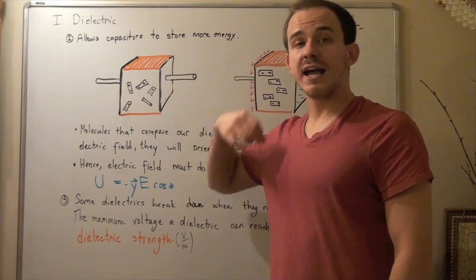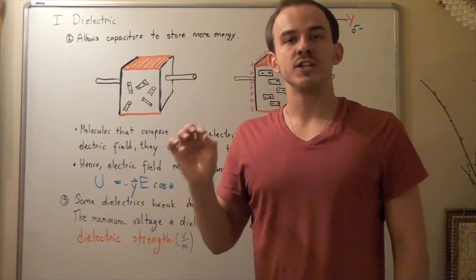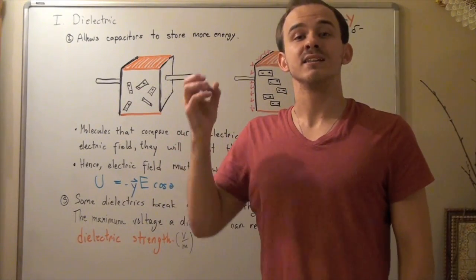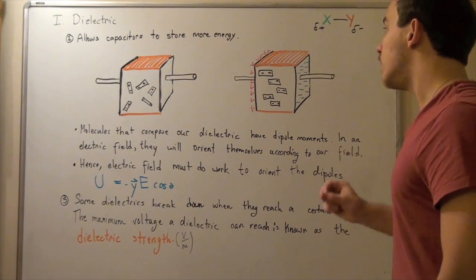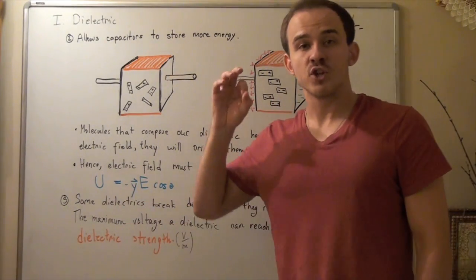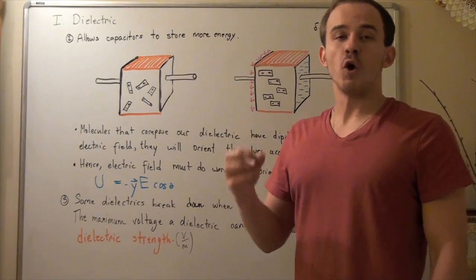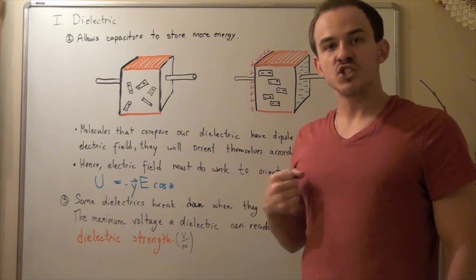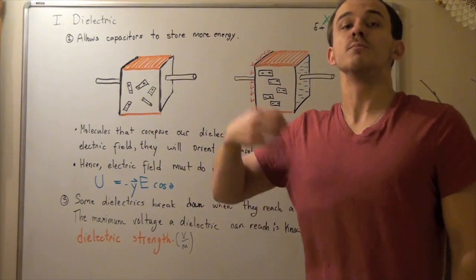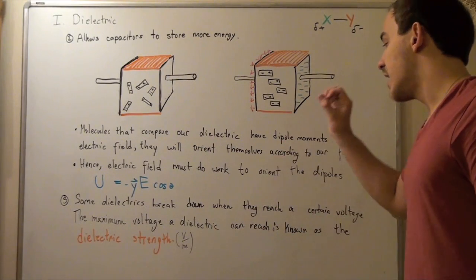The final purpose of our dielectric is the following. Some dielectrics have a maximum voltage — if this voltage is achieved, the dielectric will break down and begin to conduct electricity. At or above this voltage, electrons will begin to flow from one plate to the other, allowing the capacitor to discharge and electrical work to be conducted. This becomes very important in certain devices, because if your voltage goes above the limit, electrons can move and electrical work can be transformed into thermal or mechanical energy. This maximum voltage is known as the dielectric strength, and it has units of volts per meter.